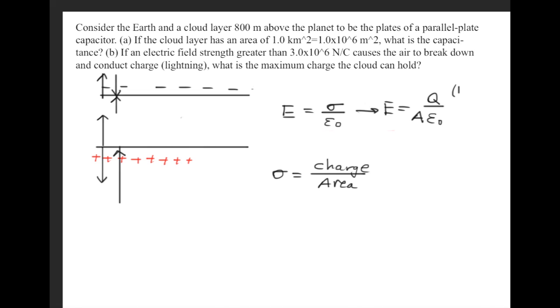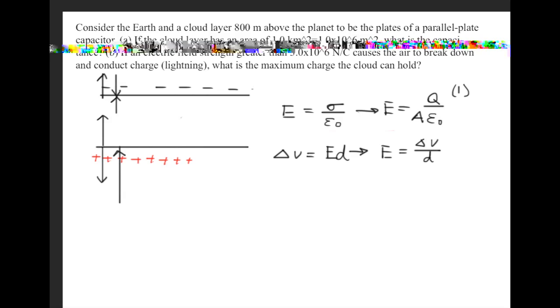So this is the first important equation we're going to need. Also recall that the potential difference, or the voltage, is equal to the electric field times the distance. We can rewrite this and isolate E, so we get that the electric field is the voltage over the distance. This is our second important formula.